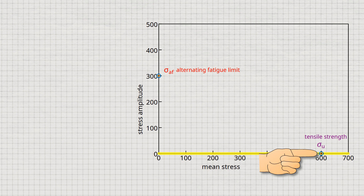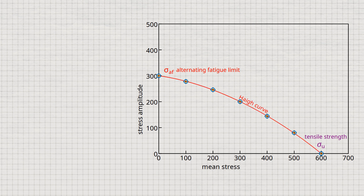This point corresponds to the tensile strength of the material. Between the two plotted points, further fatigue tests at different mean stresses could be carried out and the resulting stress amplitudes determined below which fracture no longer occurs. Typically, one would then obtain the Hay curve. Below this fatigue limit curve are the permissible stress amplitudes for a given mean stress — this area of fatigue endurance is marked in green in the diagram.